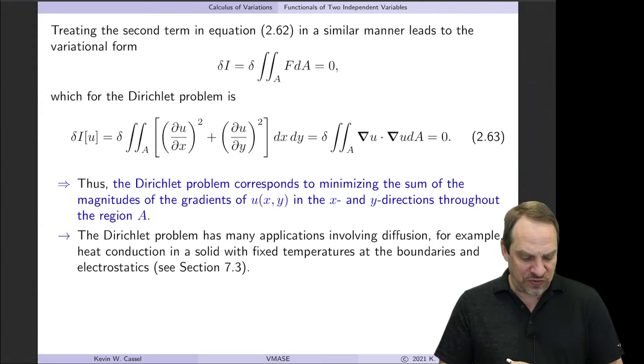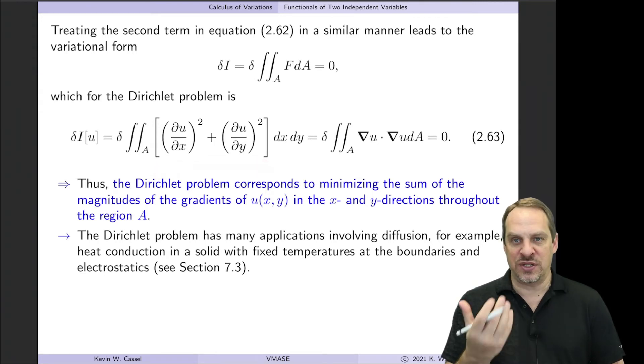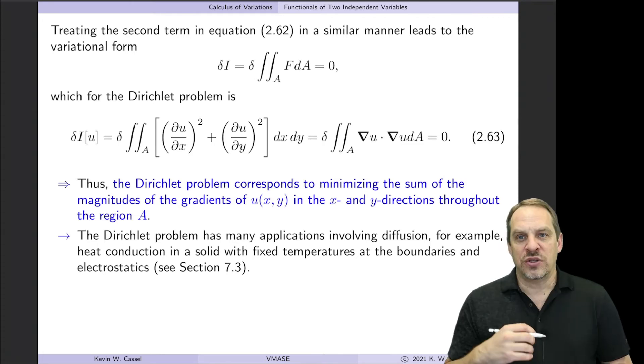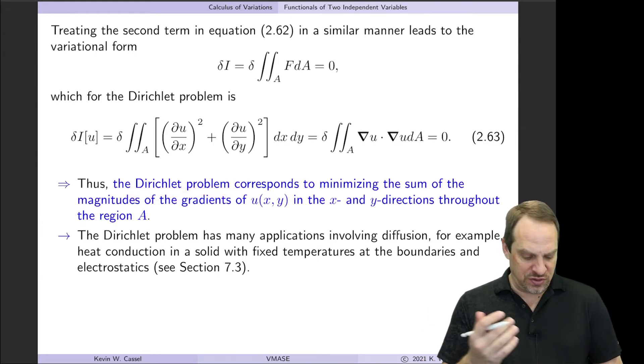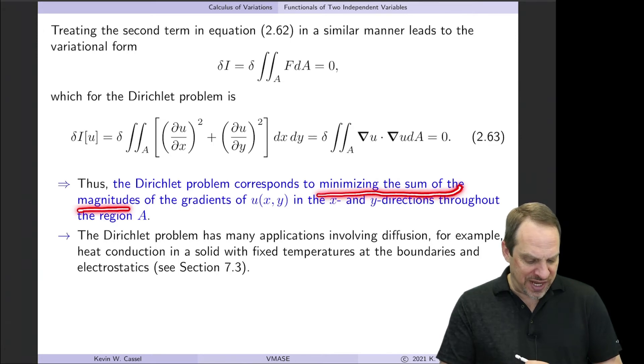However, if you look at this form, my contention is that is much more intuitive and much more clear in terms of what is mathematically happening in diffusive processes. But what you can see right away is that the Dirichlet problem, Laplace's equation with fixed boundary conditions, corresponds to minimizing the sum of the magnitudes of the gradients of U in x and y. So let's just walk ourselves through that.